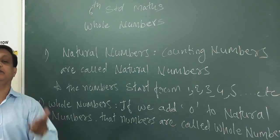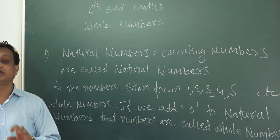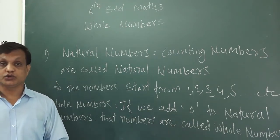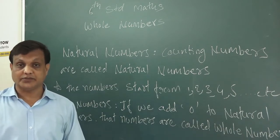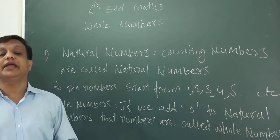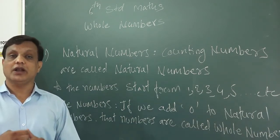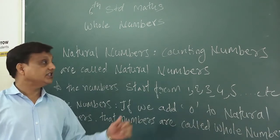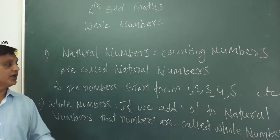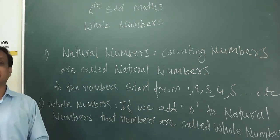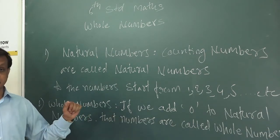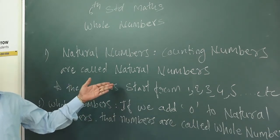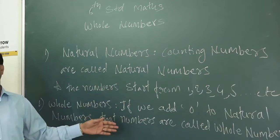Because in natural numbers we add 0. So when you add 0 to natural numbers, those numbers become whole numbers. So this is the definition. Now, why is it required to learn whole numbers? Why are natural numbers not sufficient on their own?